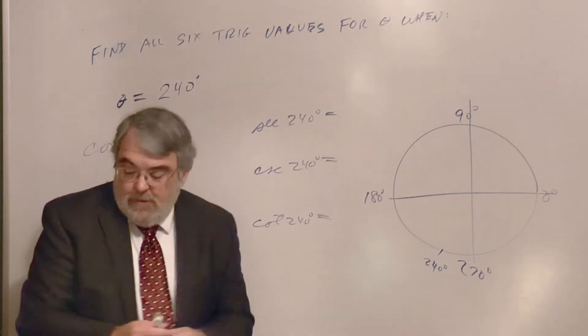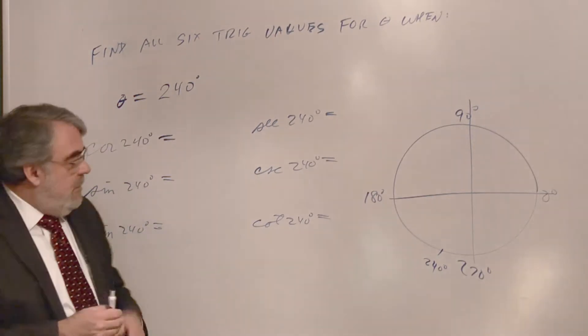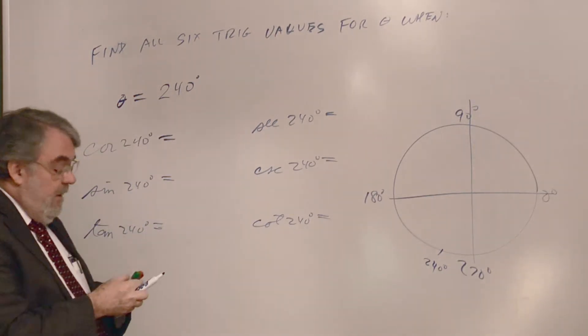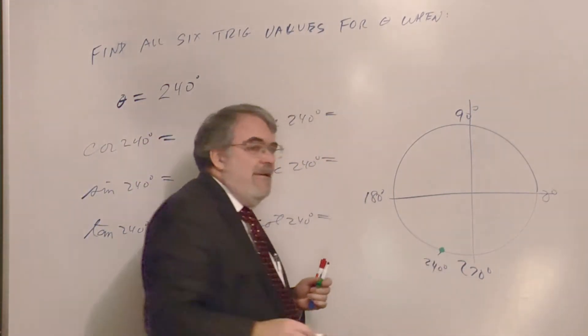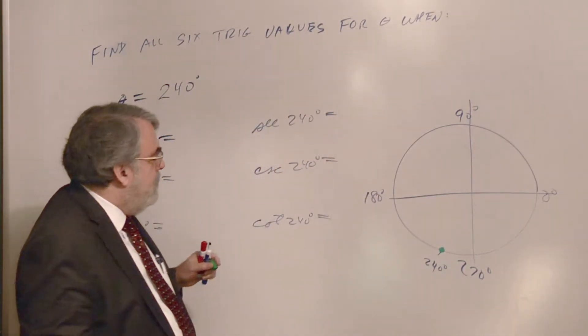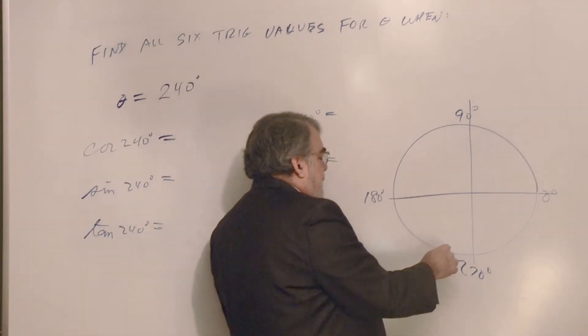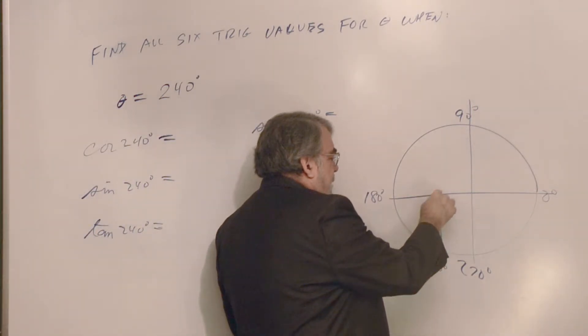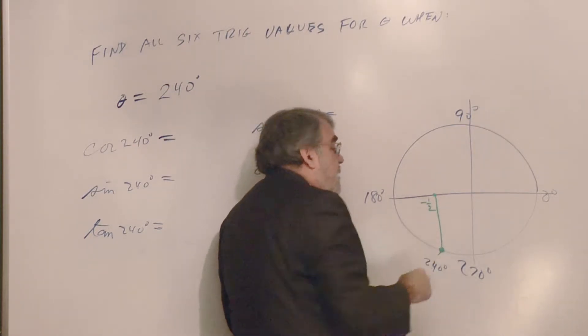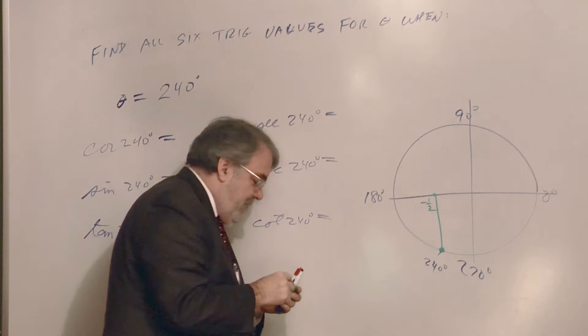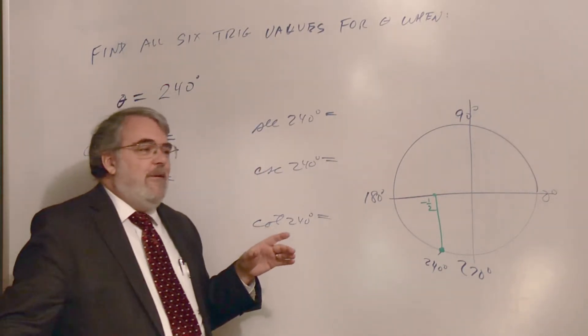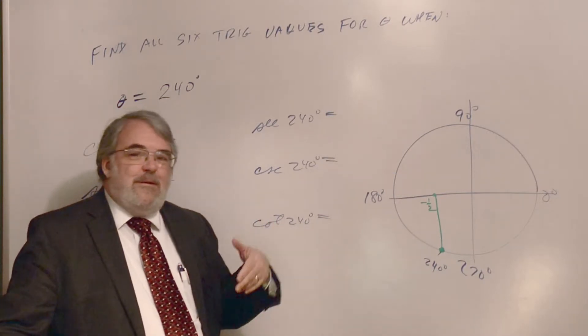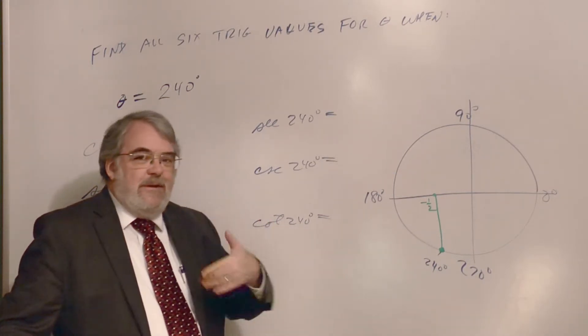Now then, so the cosine will be the x coordinate. Here's the point on the circle. And it's an xy coordinate, but the x coordinate is right here. And that would be minus one-half, wouldn't it? You know, it's a friendly angle, so your choices are one-half or square root of 3 over 2 or square root of 2 over 2 for the friendly angles.